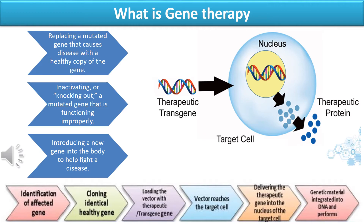Whatever option we use, there are basic steps in all conditions of gene therapy. The first step is identifying and locating the affected gene in the genome. The second step is making many identical copies of the healthy gene. The third step is loading the vector or carrier with this therapeutic healthy gene. The next step is the vector reaching the target cell, delivering the therapeutic gene along with its own genome into the nucleus of the target cell. The last step is the expression of that inserted genetic material inside the organism.